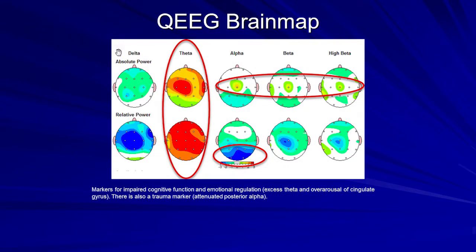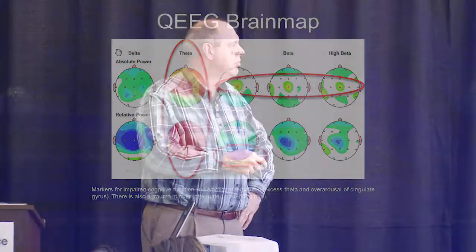Here's the QEEG map, and this is Alex's. He had this excess theta. You see that a lot with ADHD — that's the classic marker. So I felt like I could justify compromising with the parents: we're going to do this one protocol to try to bring that down.